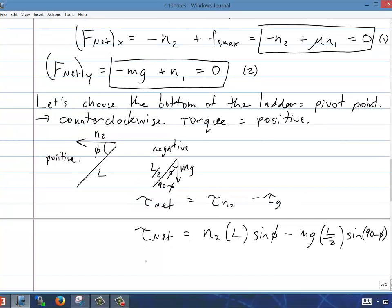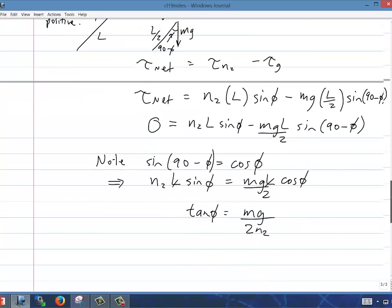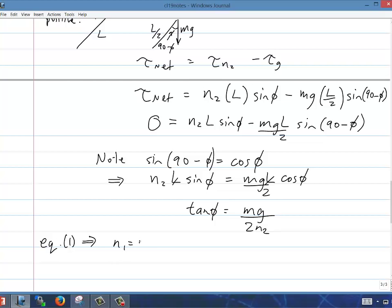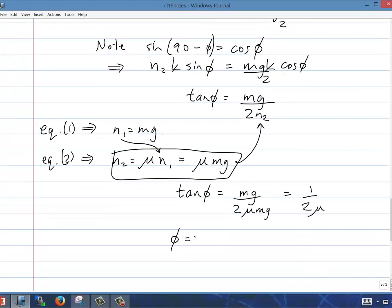Next step is you should know from geometry that sine of 90 minus phi can be written as cosine of phi. It's the same thing. So solving this out, rearranging, there's L's on both sides of that equation, so they'll cancel. You get sine phi over cos phi is tan phi, and that's Mg over two N2. Equation one says that N1 was Mg, and equation two said that N2 was mu times N1. So that's mu times Mg, and we plug that in to that equation for tan phi. I get tan phi is Mg divided by two mu Mg. Mg's cancel, and there's a mu there. That's one over two mu. So phi can be found as inverse tan of one over two mu. That's the maximum angle you can lean that wall up and not have it slip.